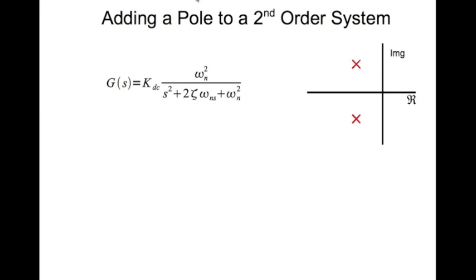Now let's look at adding a pole to a second order system. So this is our canonical second order system, no zeros. These are the pole locations, a complex pole pair in the complex plane. Now this is the underdamped case.